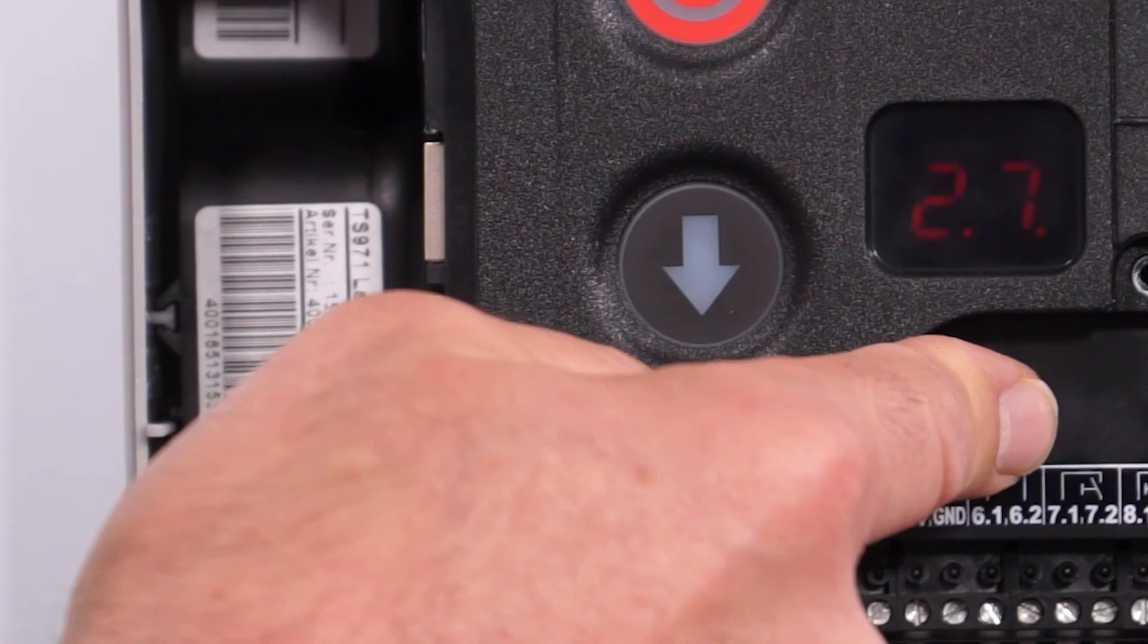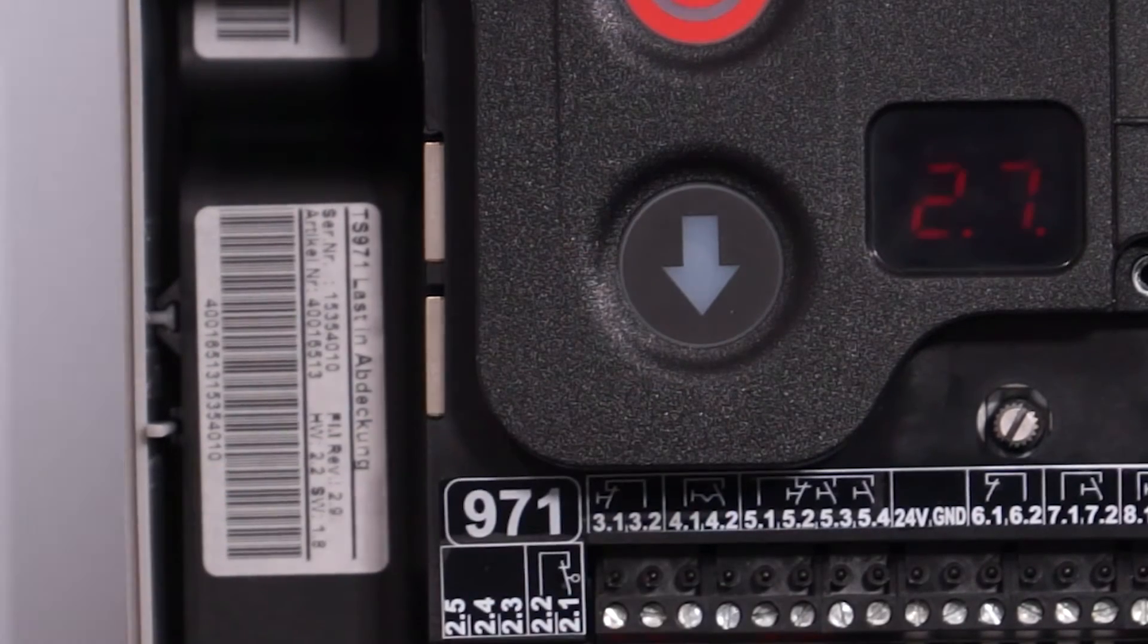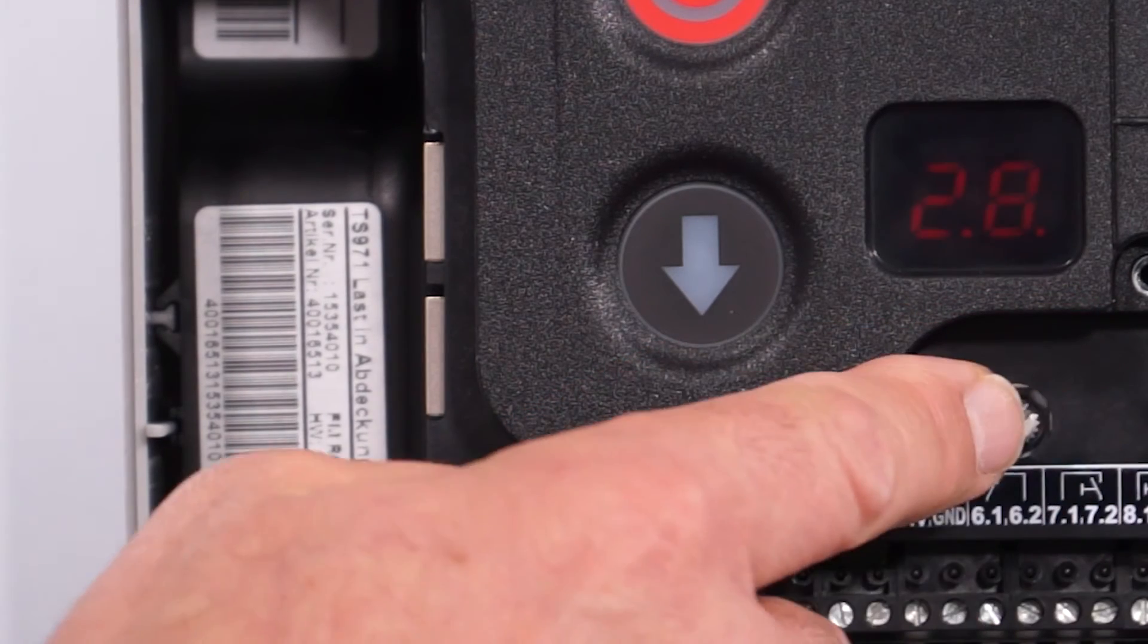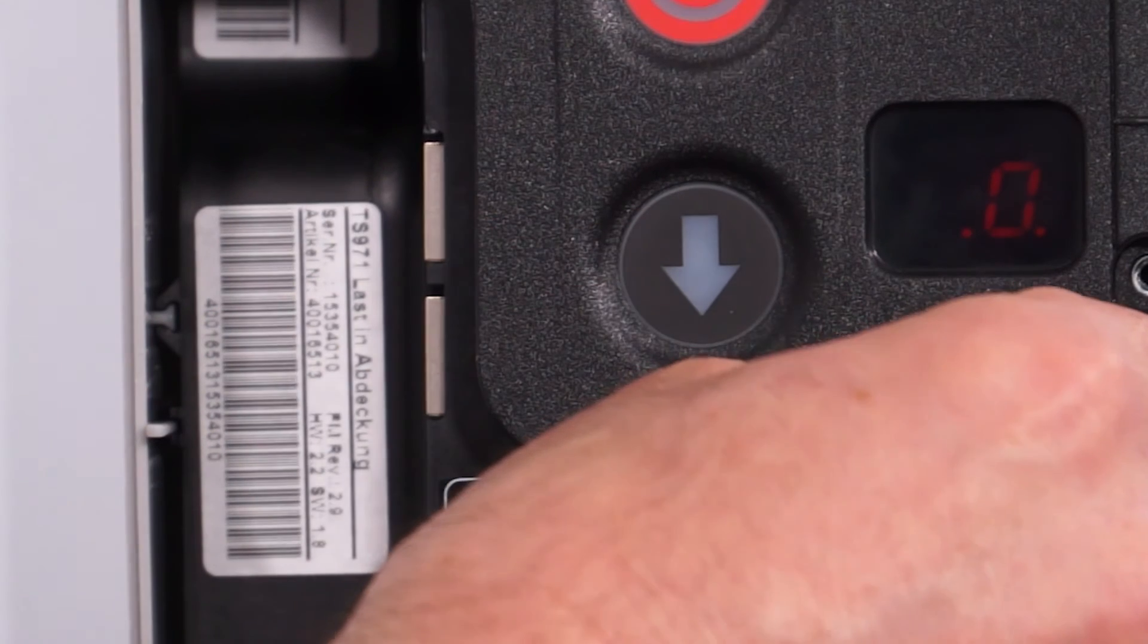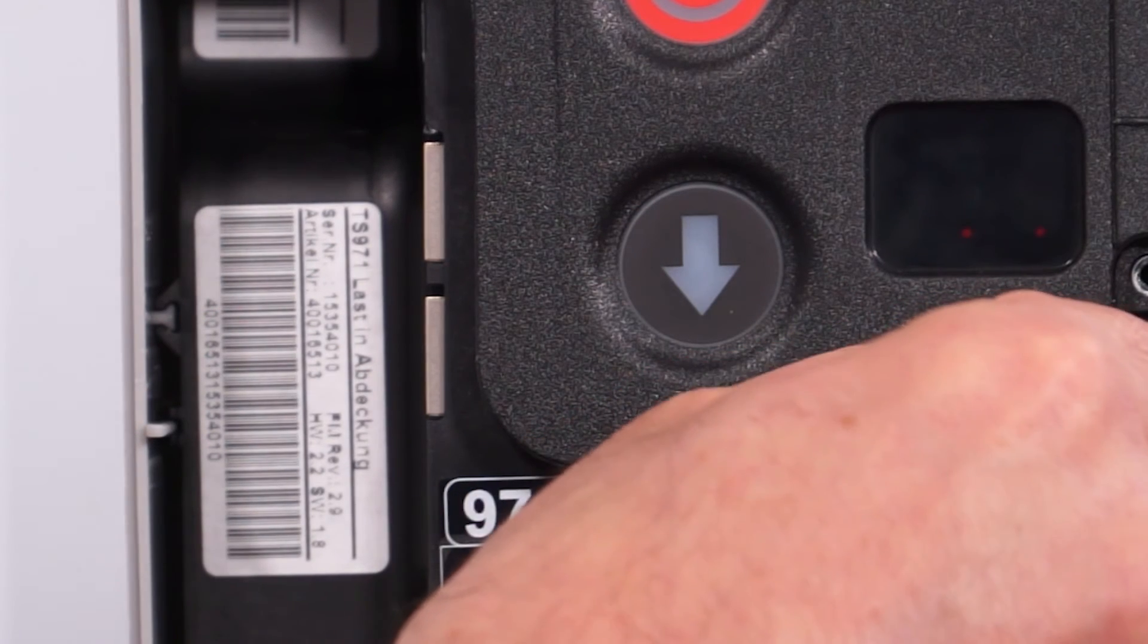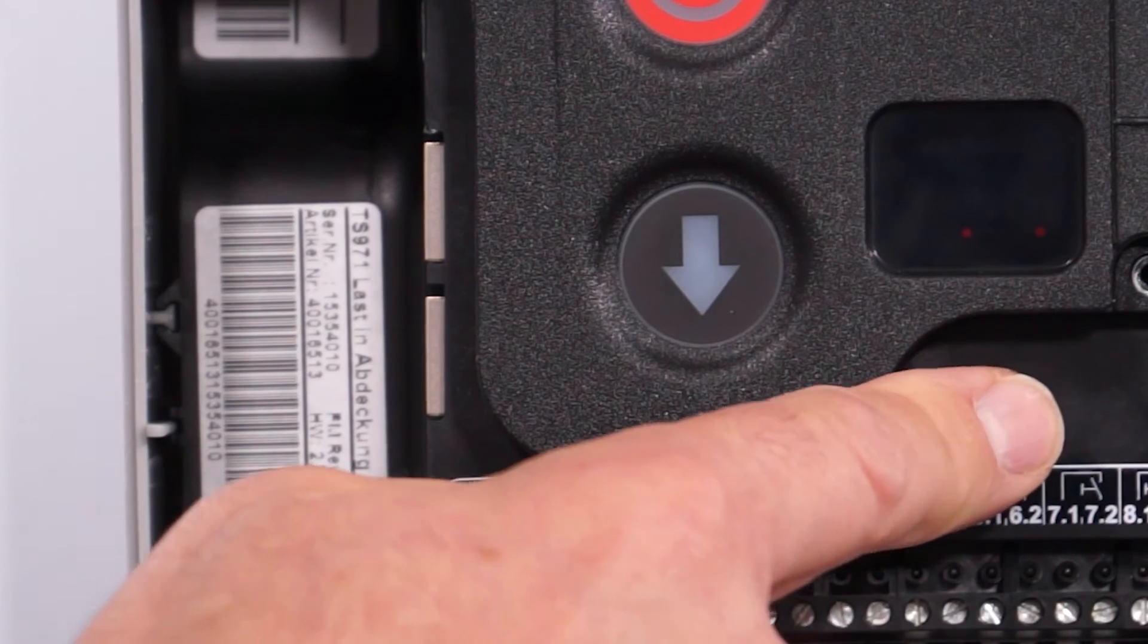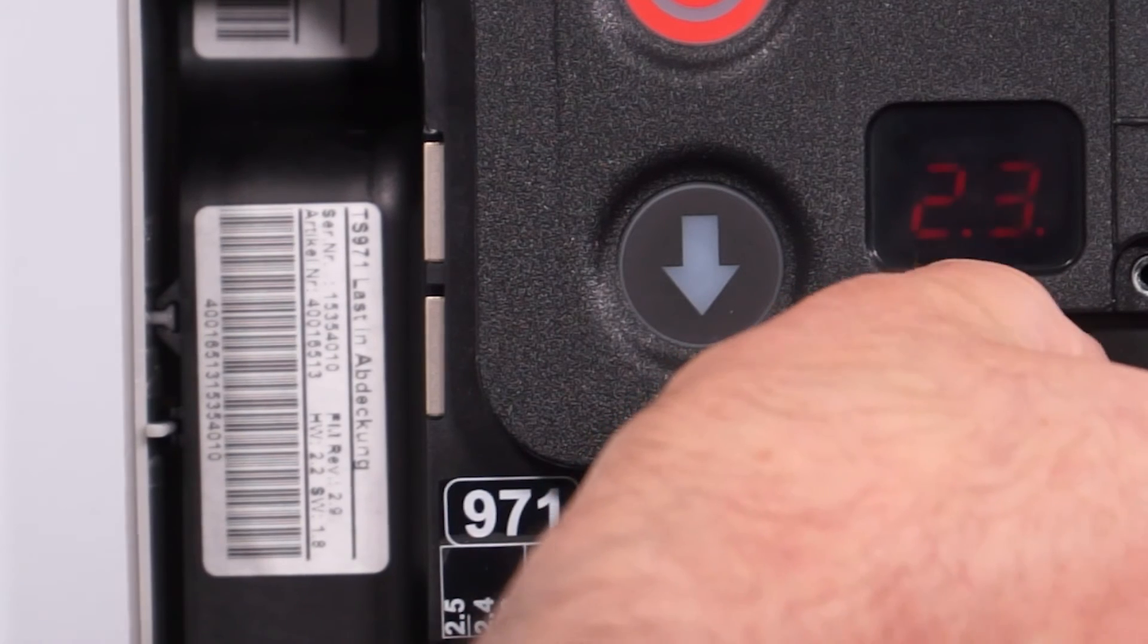So we set that by merely confirming with a push of the button. To do the green traffic light we now change parameter to 2.8 and this time we have to set parameter 2.8 to number 7. And again on number 7 we confirm that with a push of the button and then we turn back to the two zeros.